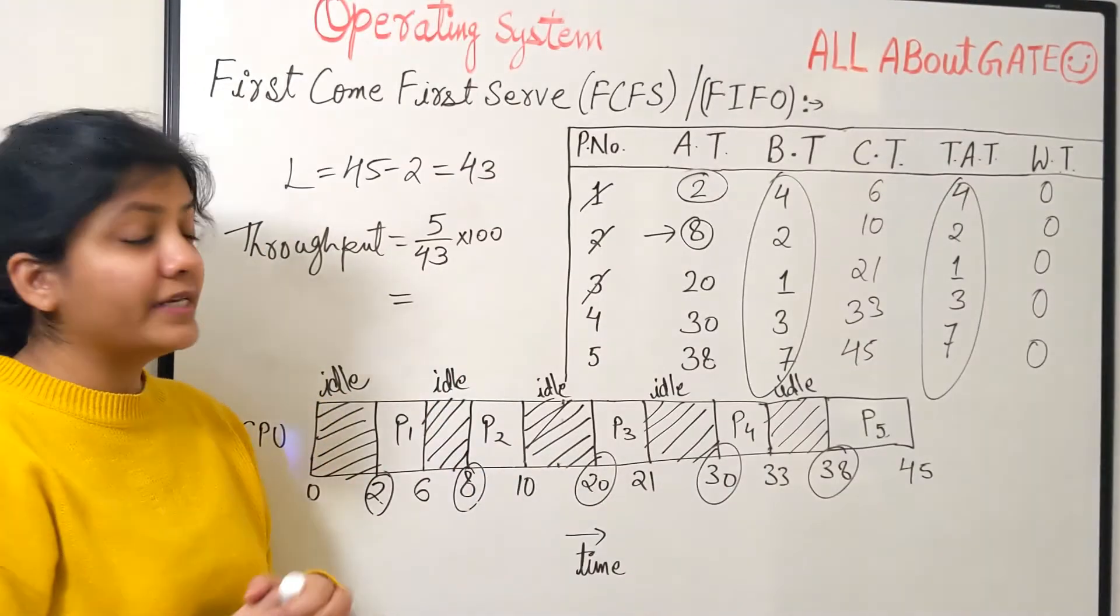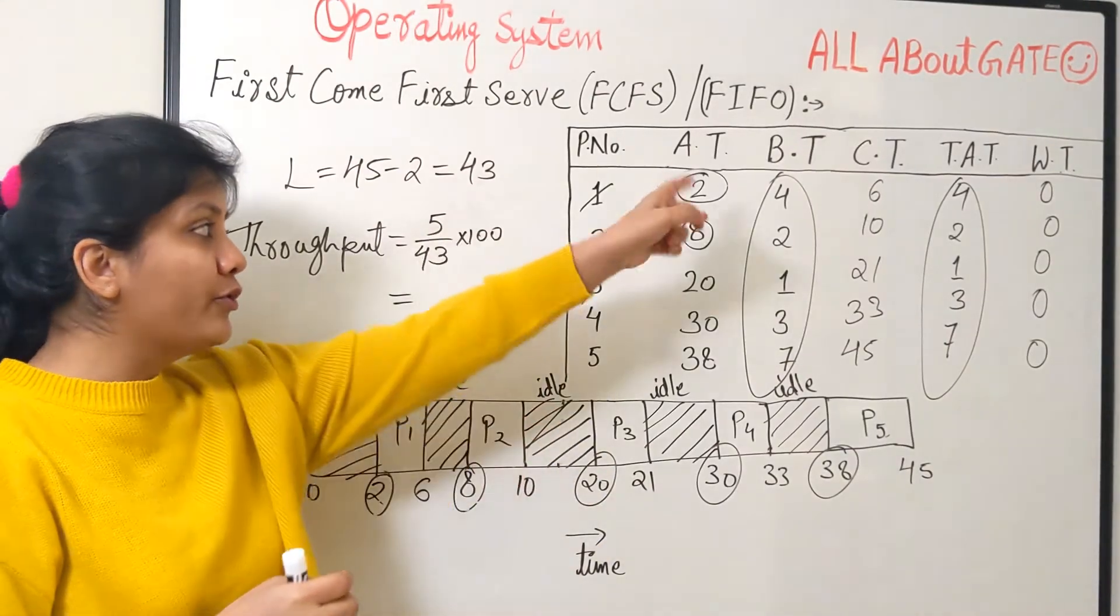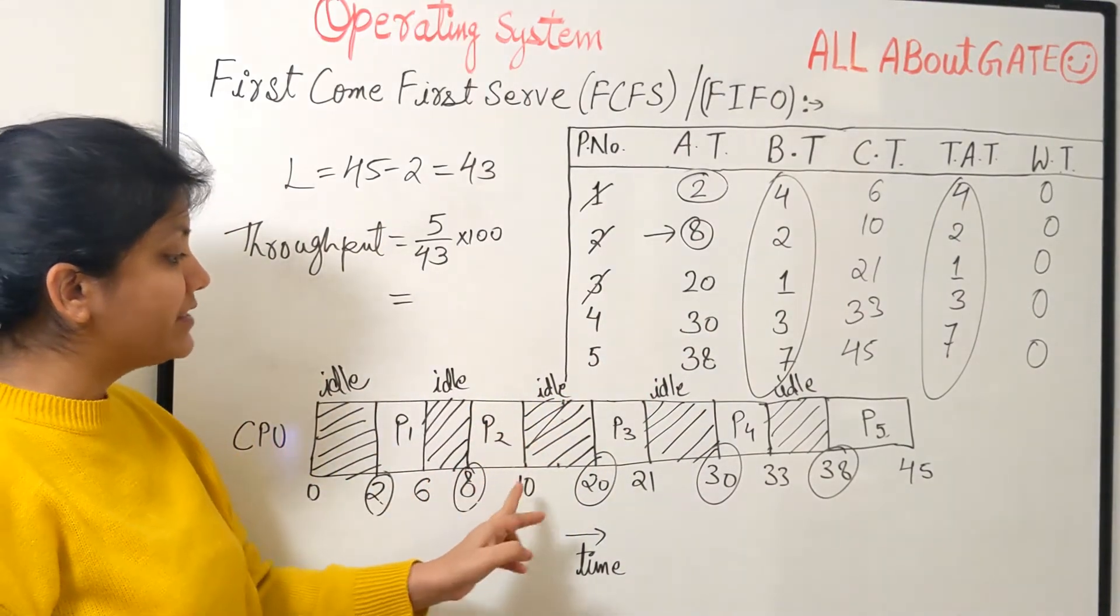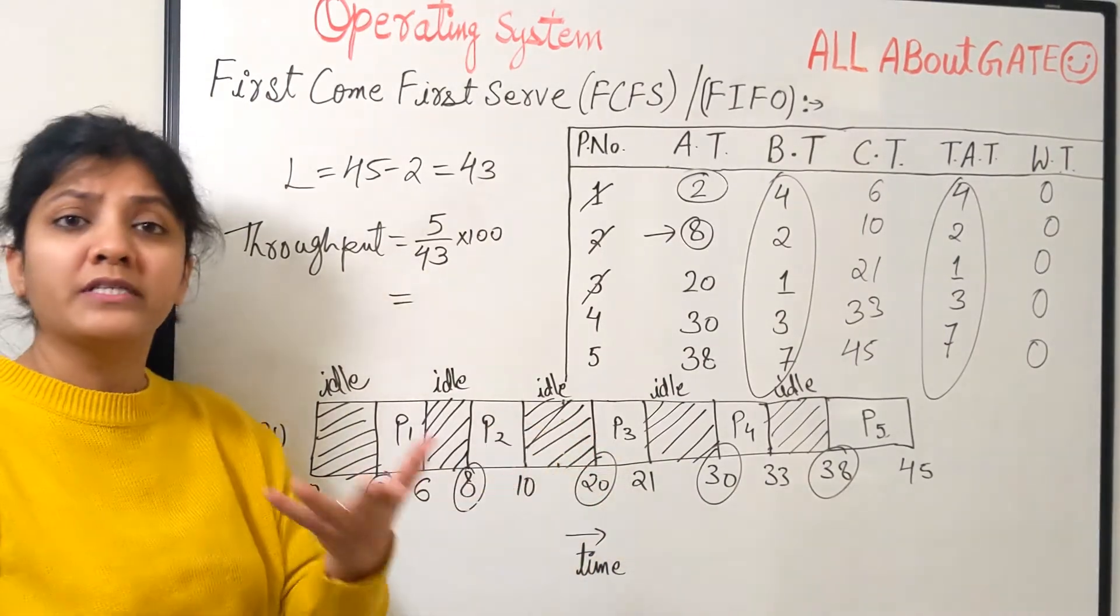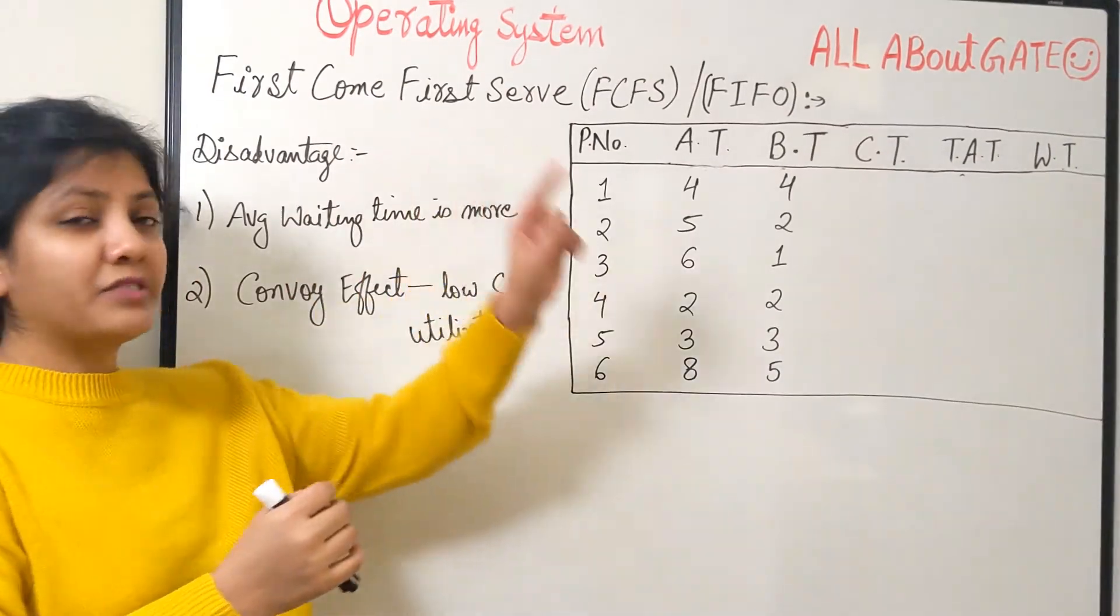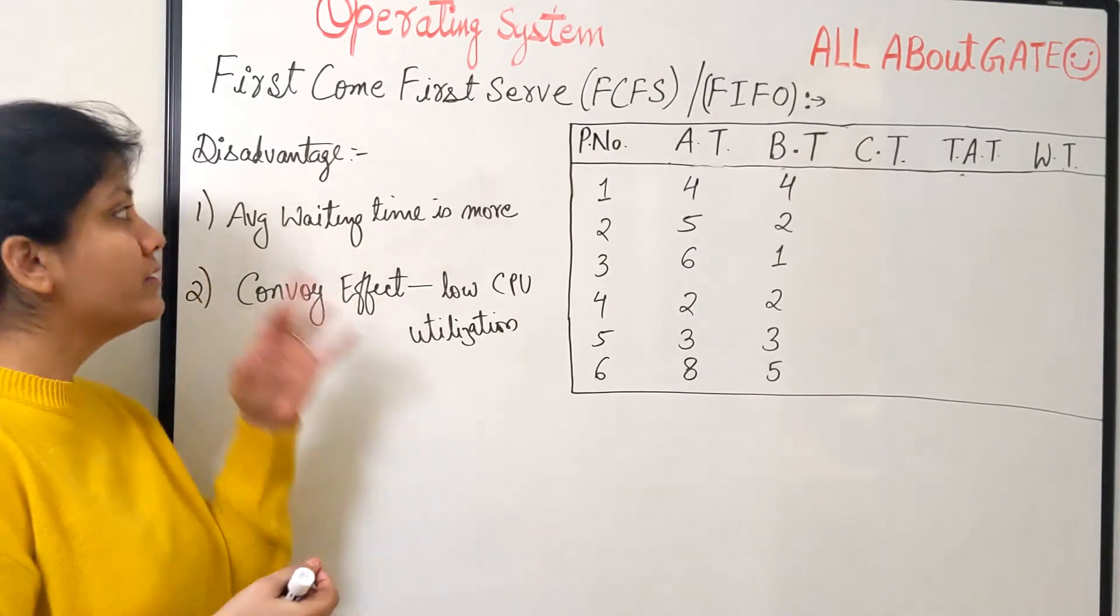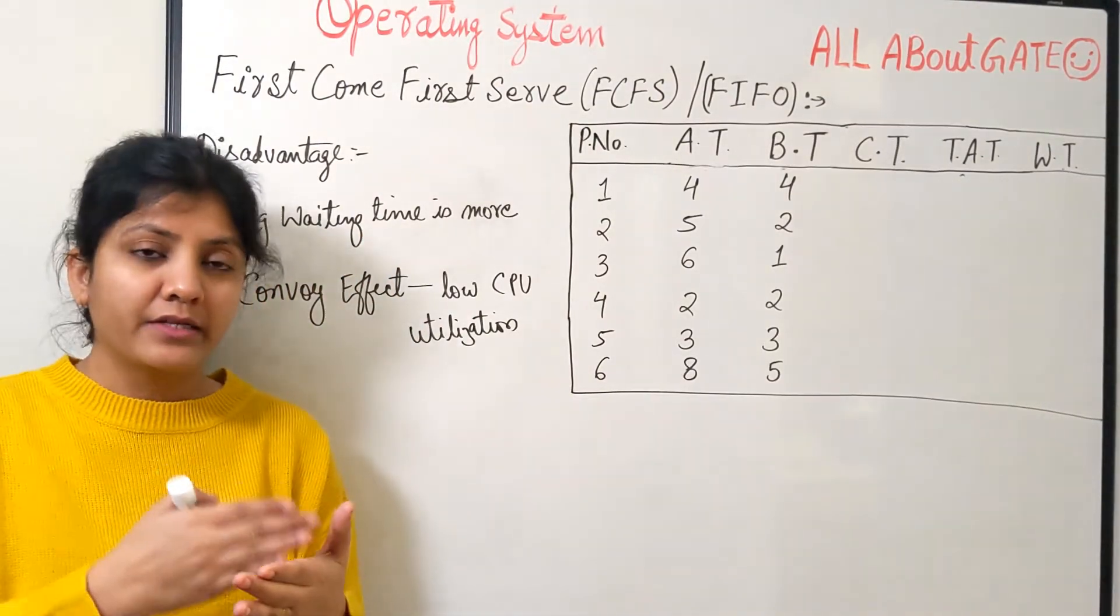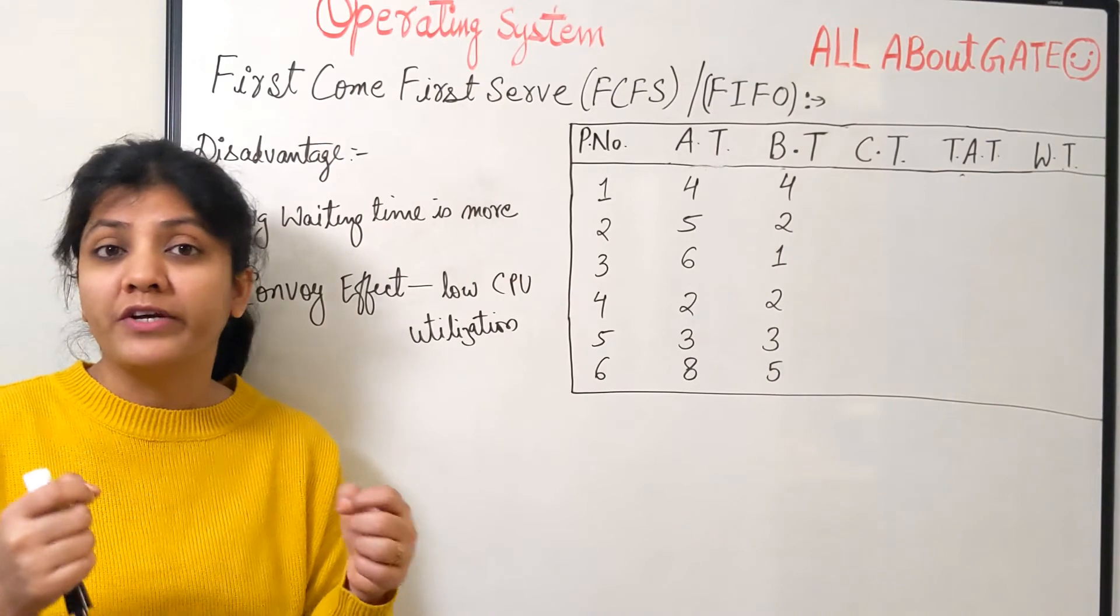I hope with this example and its practice you get to understand how to actually implement the FCFS and what makes a difference and how you have to keep your eye on the arrival time and don't go by that when it is finished immediately you can assign the next process. Until it is available it cannot be assigned. No matter your CPU goes into idle time let it go. Now the next thing we need to understand about the FCFS is that it reflects, it shows the convoy effect. As a disadvantage I can say that the average waiting time is more.